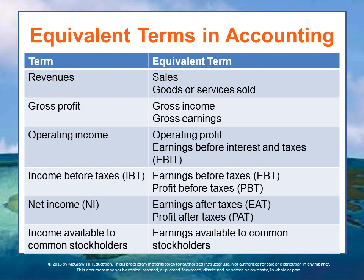Then you have gross profit, which is revenue minus the cost of goods sold — sometimes called gross income or gross earnings. You have operating income, which is gross profit minus expenses like rent, employees, and utilities. Operating profit, also called earnings before interest and taxes — EBIT — is the more proper name for operating income. That means all the money you get from customers minus all the money you spend on business activities, not including taxes paid to government or interest paid to banks.